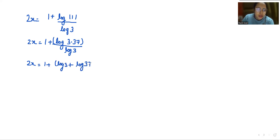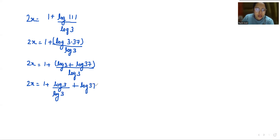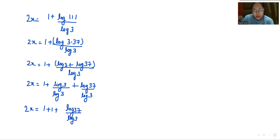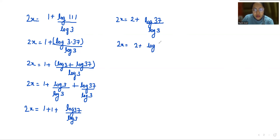Again I'm going to use the rule log(a × b) = log a + log b. So 2x = 1 + log 3 / log 3 + log 37 / log 3, which gives us 2x = 1 + 1 + log₃(37), so 2x = 2 + log₃(37).